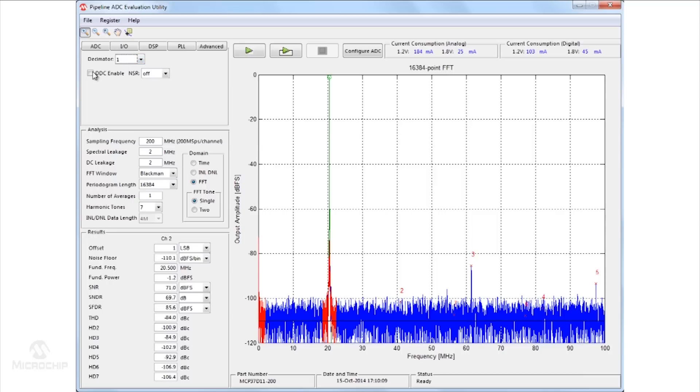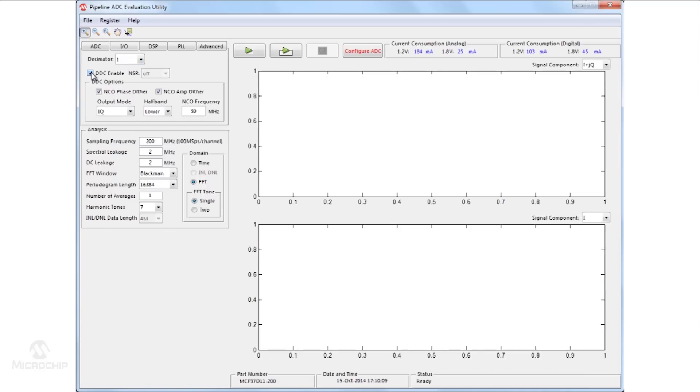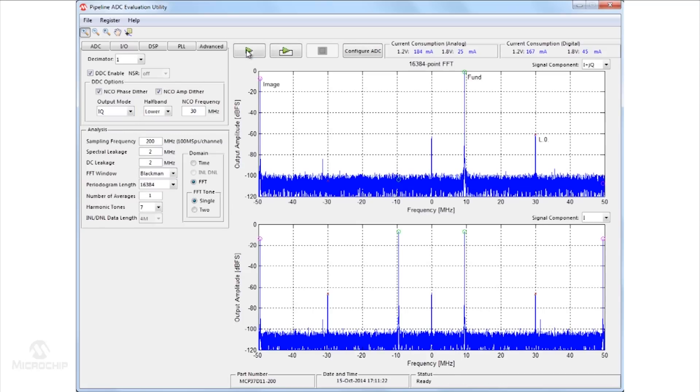Specific to the MCP37D11-200 is the inclusion of the digital down converter. The acquired digital signal from the A to D converter can be mixed with an on-chip local oscillator. The output can be viewed in a number of formats including combined and INQ output.